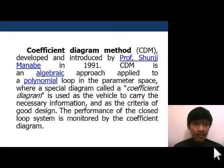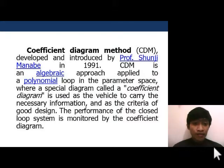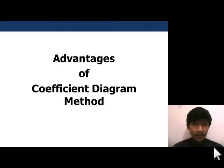Going back to the Coefficient Diagram Method: it is an algebraic approach applied to a polynomial loop in the parameter space, where a special diagram called a coefficient diagram is used as the vehicle to carry the necessary information and as the criteria of a good design. The performance of the closed-loop system is monitored by the coefficient diagram.